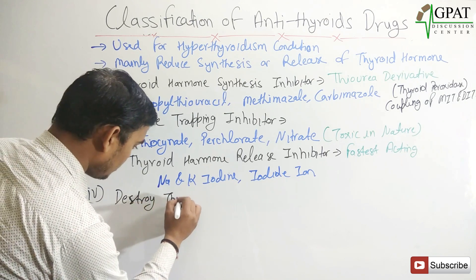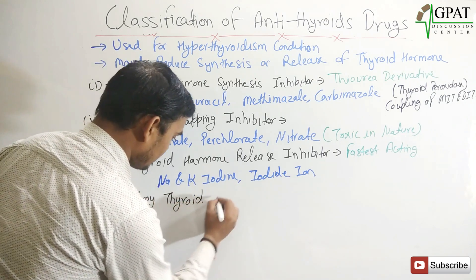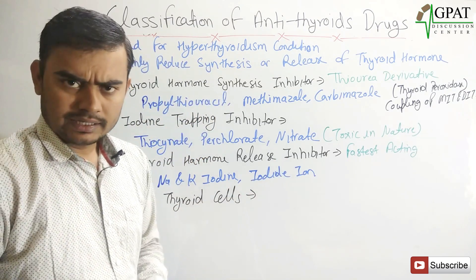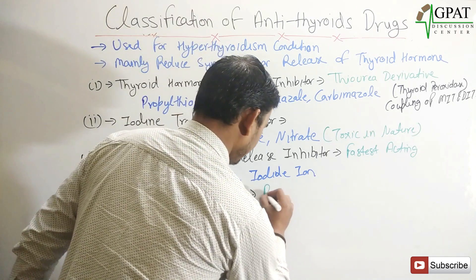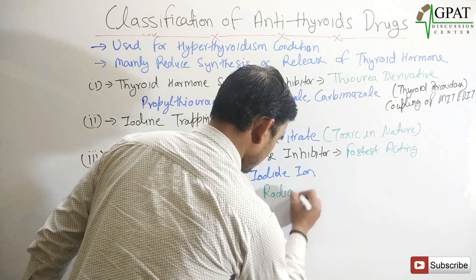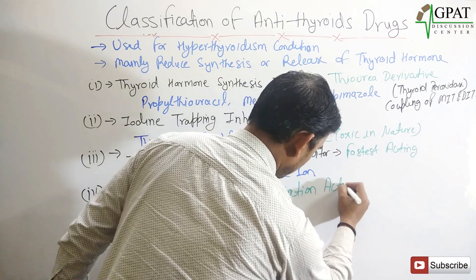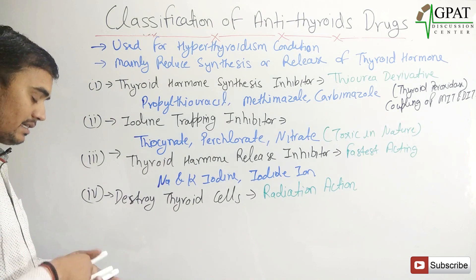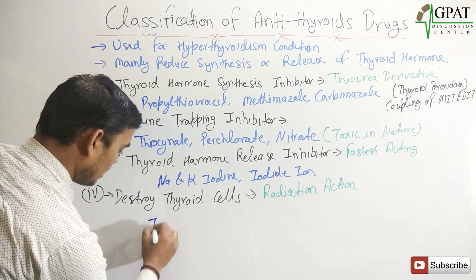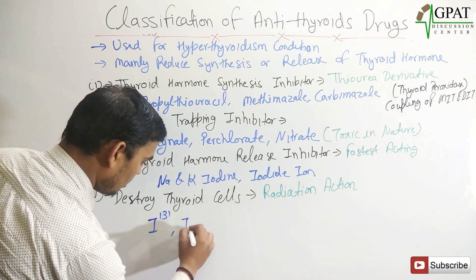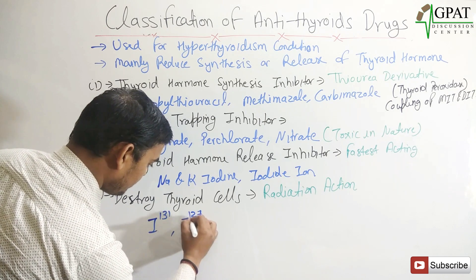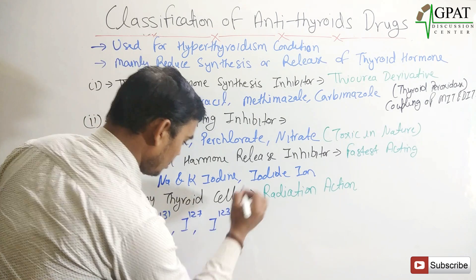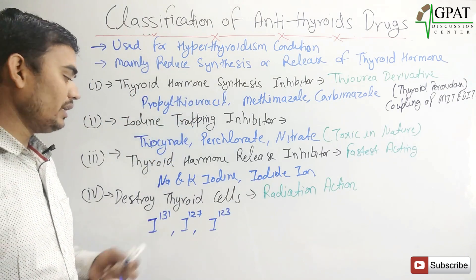The fourth class involves drugs that destroy thyroid cells or tissue through radioactive action, giving the longest duration of action. Examples are iodine-131, iodine-127, and iodine-123.